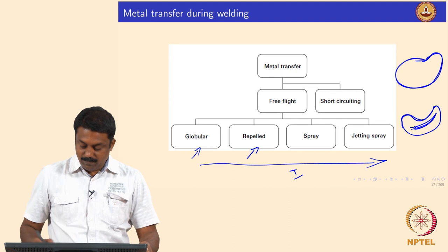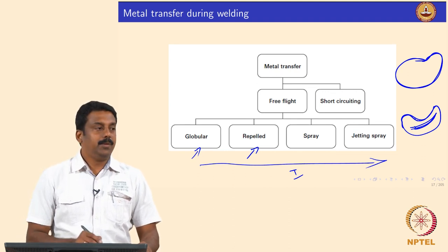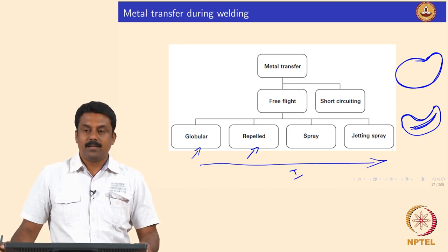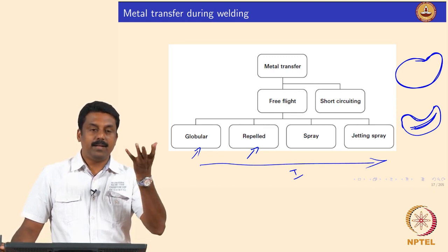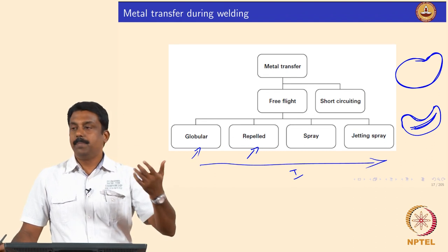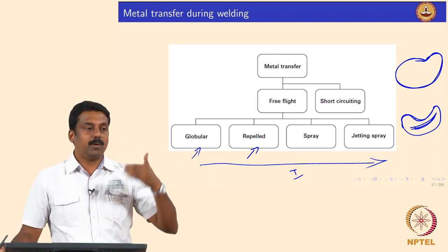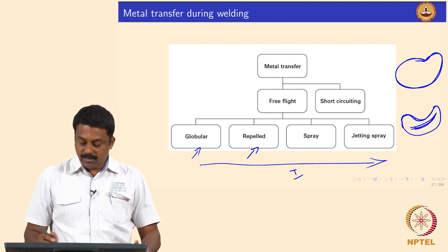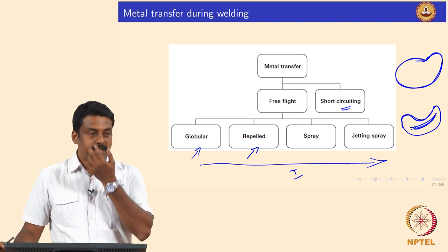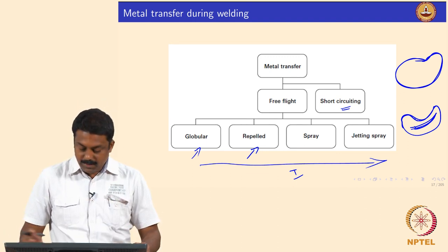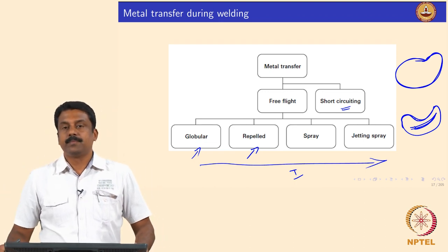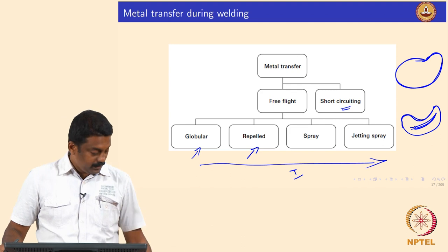These four modes are commonly observed during GMAW welding and are known as free flight. It is called free flight because droplets are transferred from the tip to the workpiece with no contact between the consumable and the weld pool. In some cases you also make contact and transfer the droplet by short circuit, and that is a separate specification.